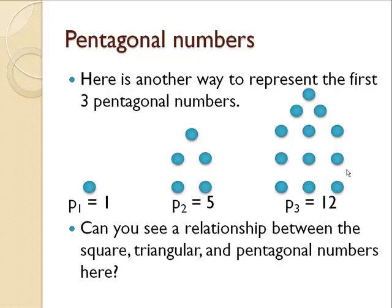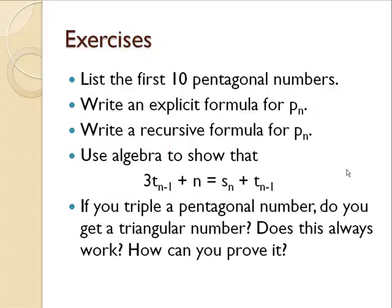Some exercises I'd like you to try is to list the first 10 pentagonal numbers. Write an explicit formula for P sub n, perhaps using some relationships that you've noticed between P sub n, S sub n, and T sub n. I'd also like for you to write a recursive formula for P sub n. And use some algebra to show that 3 times the previous triangular number plus n is the nth square number plus the previous triangular number.